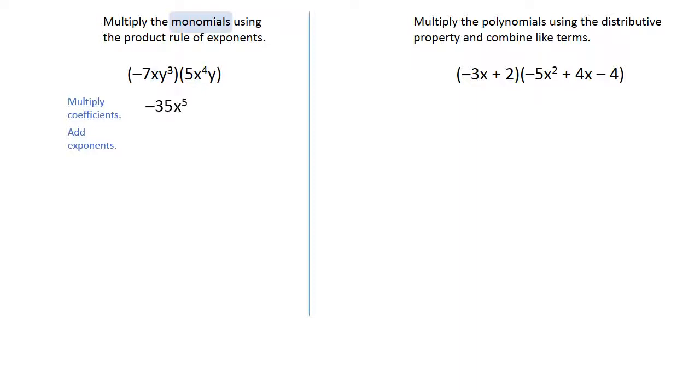Then we're going to look at the y's. We have y to the 3rd power and y to the 1st power, and we're going to add those exponents and get y to the 4th power. That is our final answer for multiplying the two monomials together.